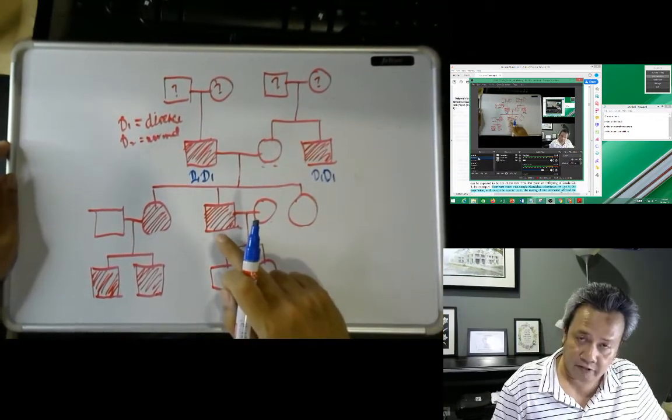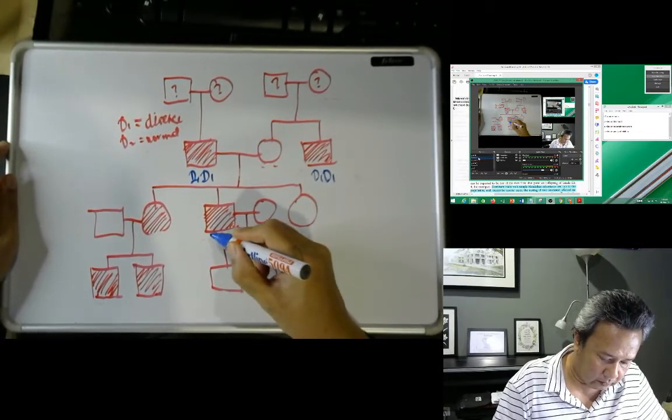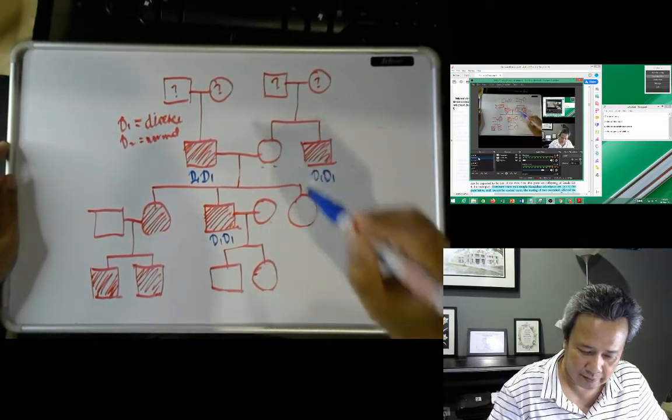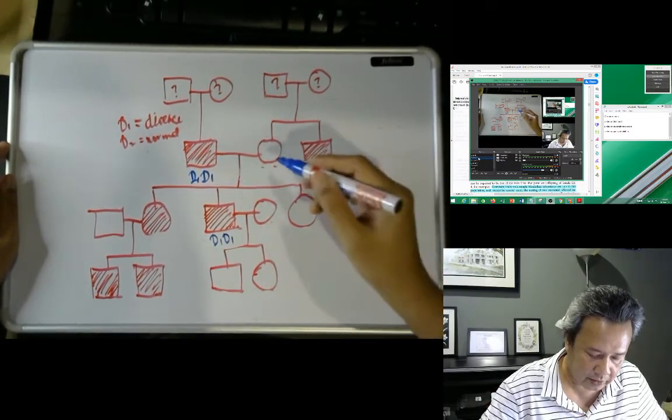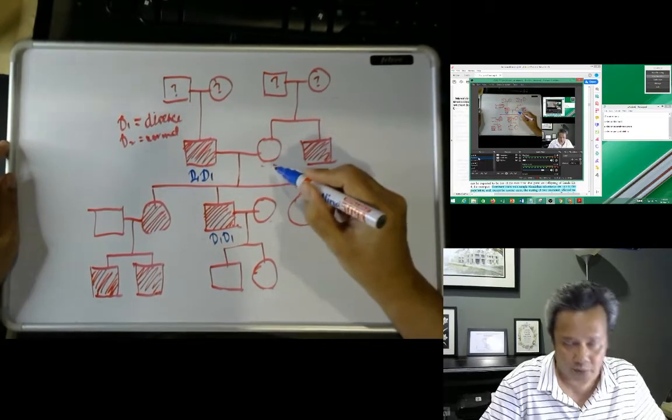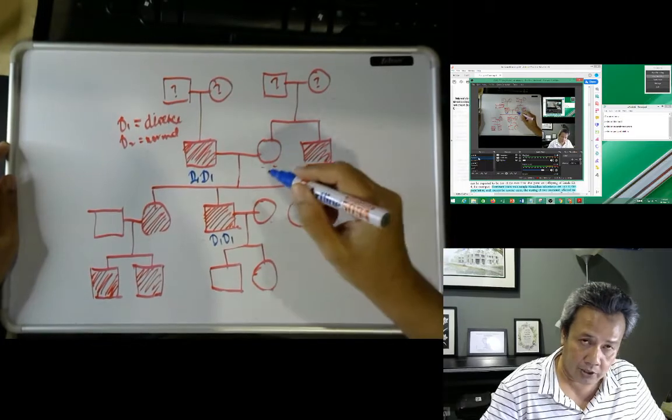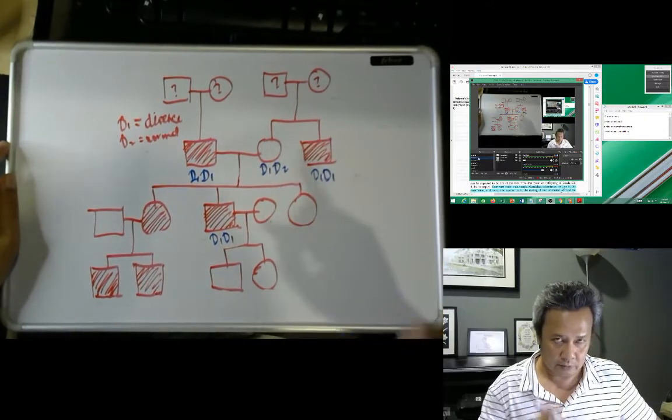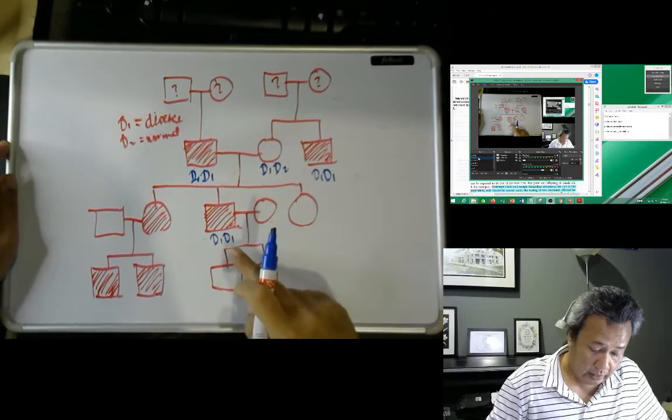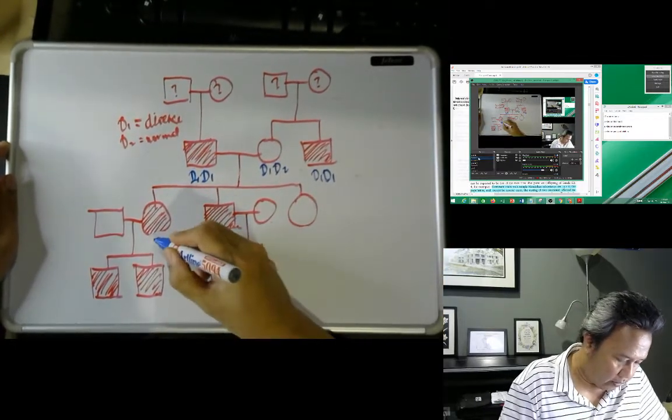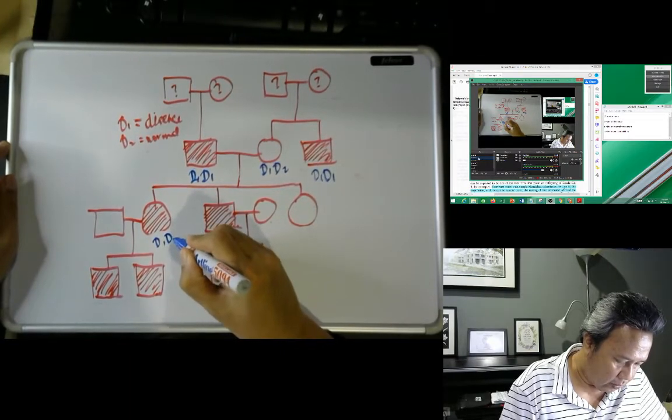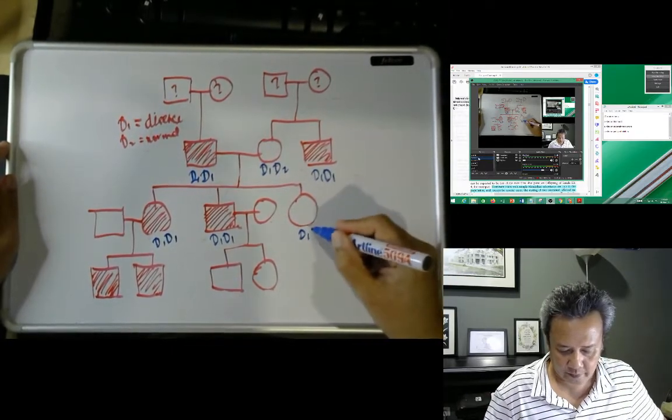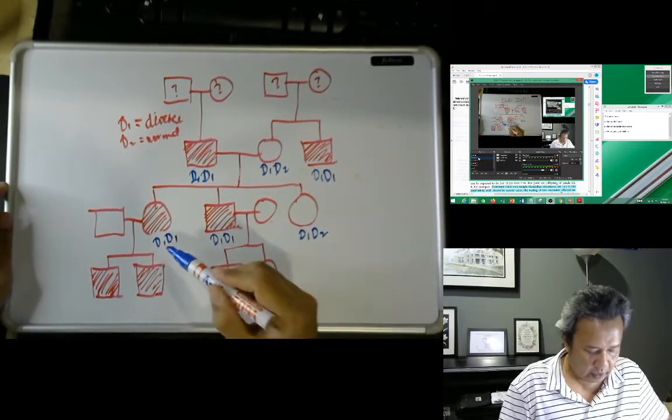This one you don't know, but this one must be D1 D1 again, remember it's recessive. This one must also be D1 D1, which means that this person must be a carrier. This must be a carrier because it's recessive. She cannot be homozygous D1 D1 otherwise she'll be affected as well, but because she's not affected she must be a carrier. So she has D1 and D2. We are trying to assume that this is a recessive disorder.